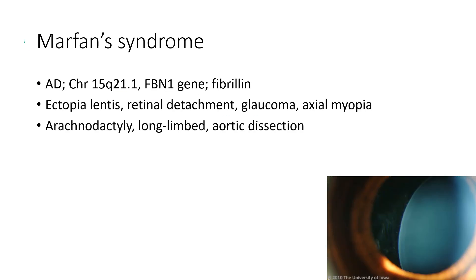Next is Marfan syndrome. It is an autosomal dominant condition affecting the FBN1 gene coding for fibrillin. The ocular features include ectopia lentis — with lens subluxation shown in this picture — retinal detachment, glaucoma, and axial myopia. The systemic features include arachnodactyly, long limbs, and aortic dissection.